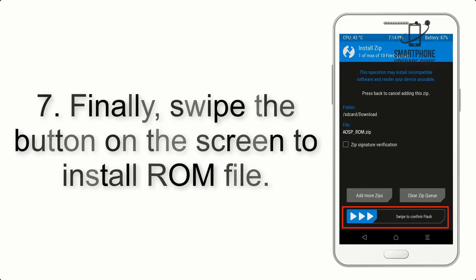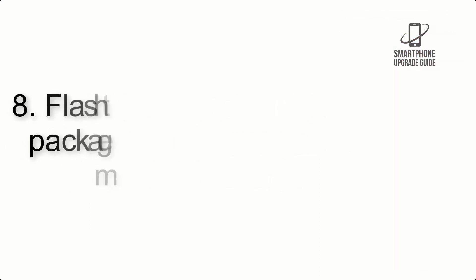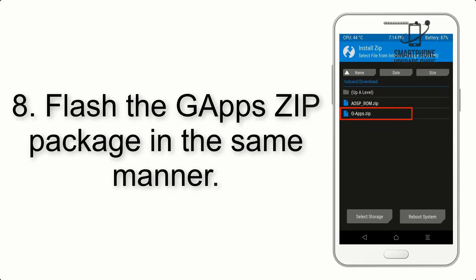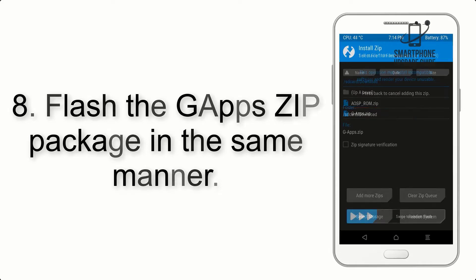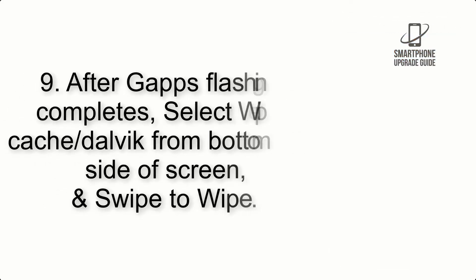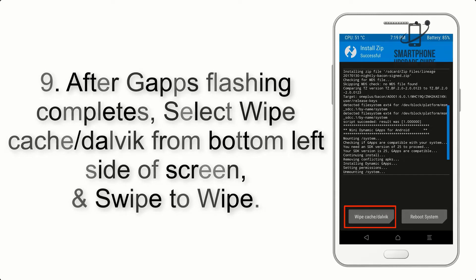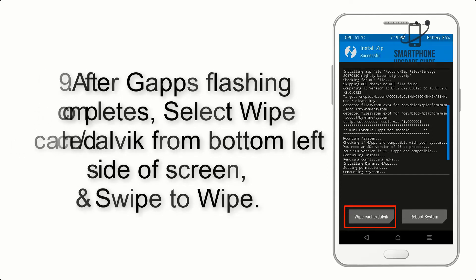Step 7: swipe the button on the screen to install the ROM file. Step 8: flash the GApps zip package in the same manner. Step 9: after GApps flashing completes, select Wipe Cache and Dalvik from the bottom left side of the screen and swipe to wipe.